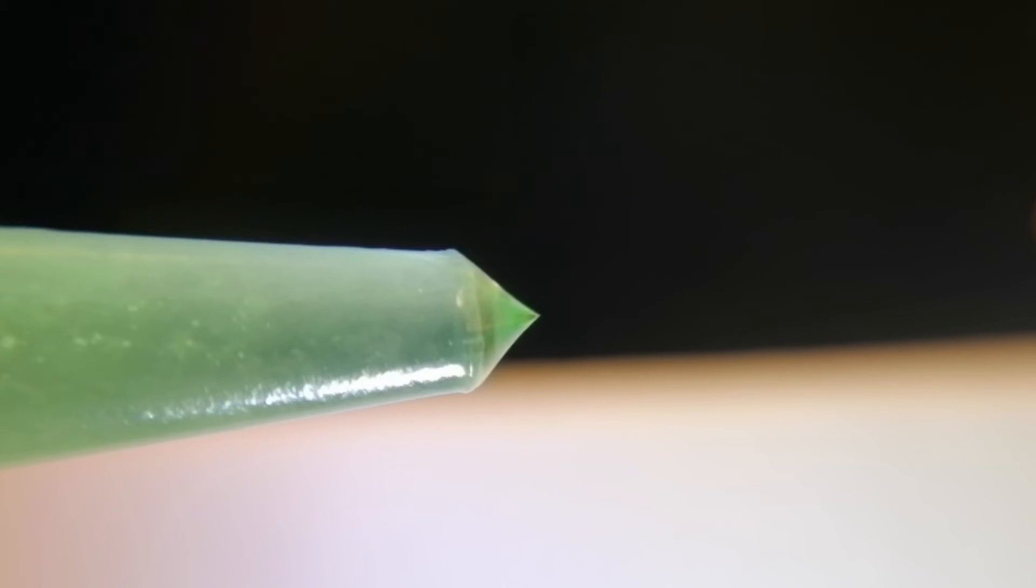Multiple jets form when the voltage is very high. And that meniscus is coming out like a strange creature. And here we have a stable electrospray. The so-called cone jet. The unicorn of electro-microfluidics.